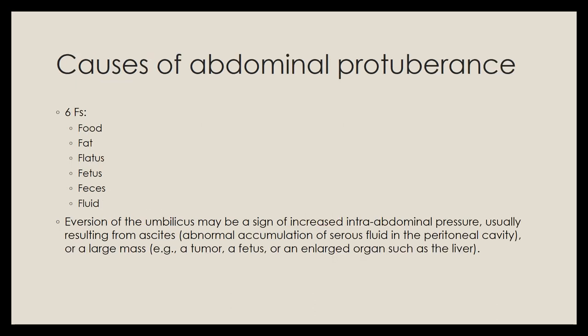The six F's are the causes of abdominal protuberance: food, fat, flatus, fetus, feces, and fluid. These are the things that can cause the abdomen to protrude beyond its normal appearance. Because of these causes, intra-abdominal pressure can increase and this can also lead to eversion of the umbilicus.